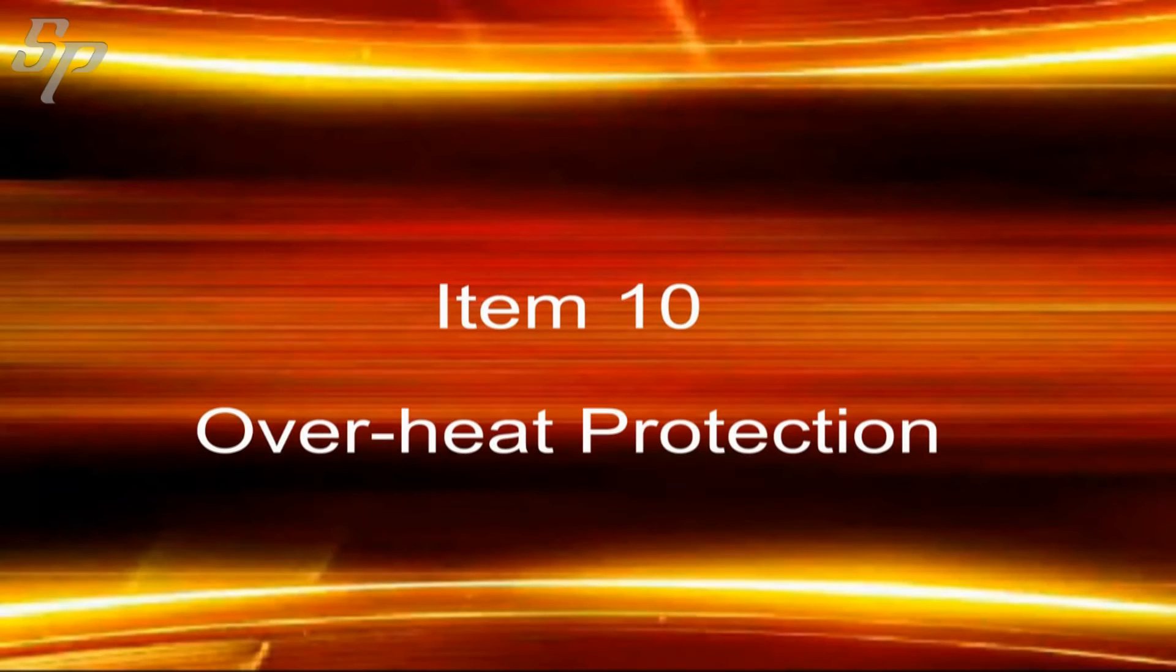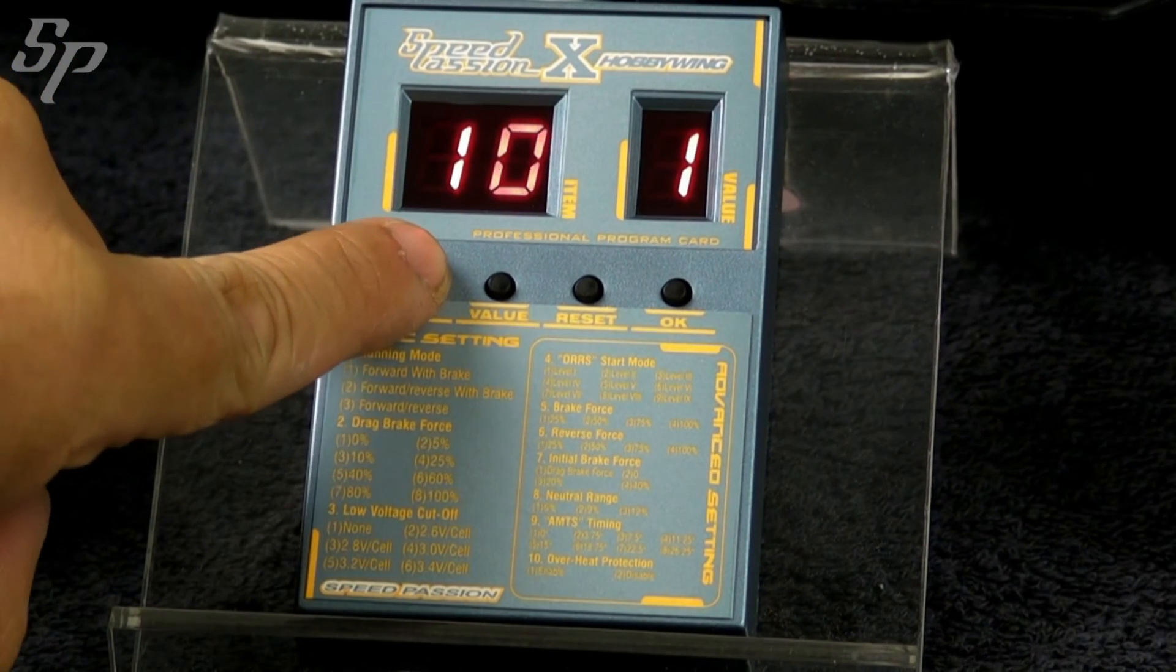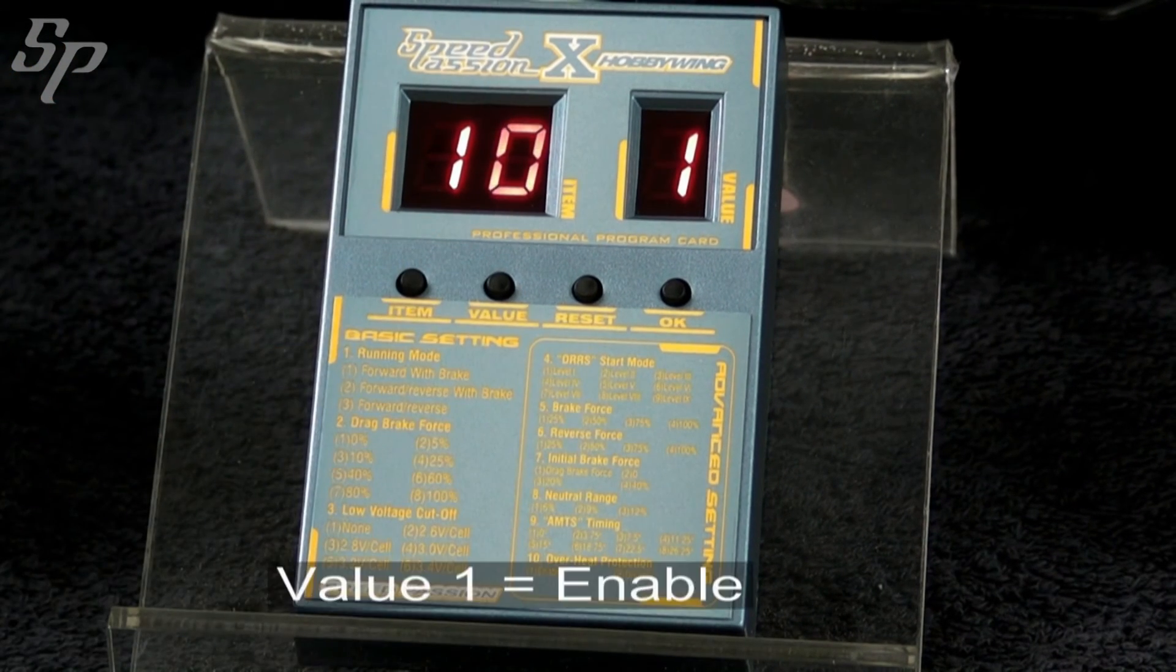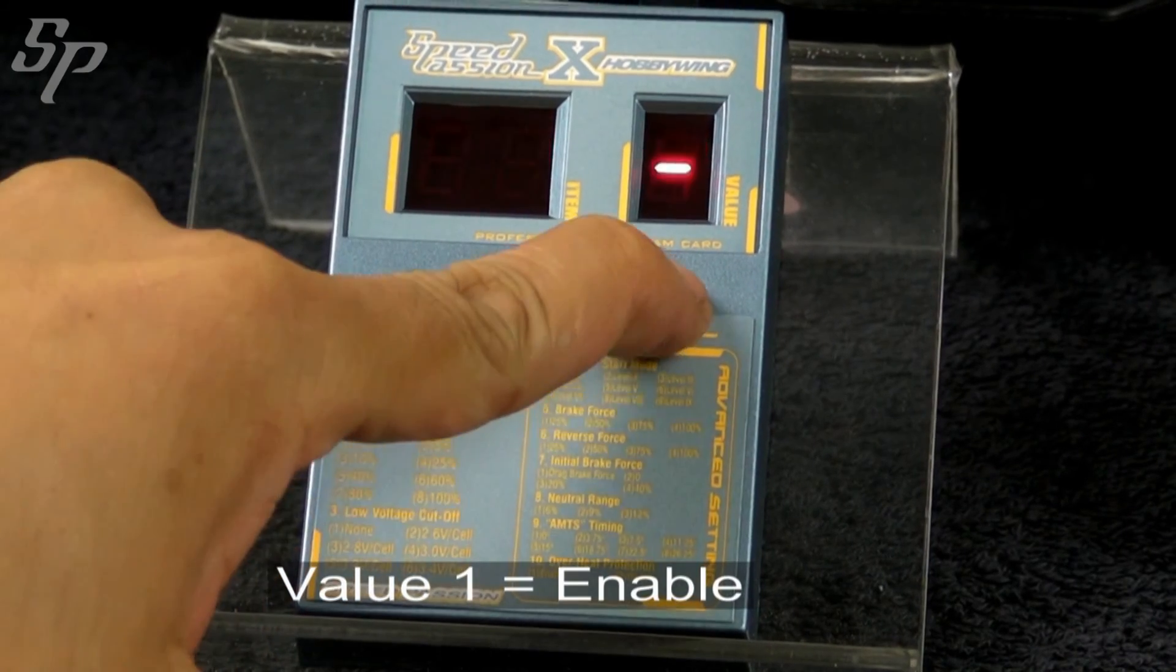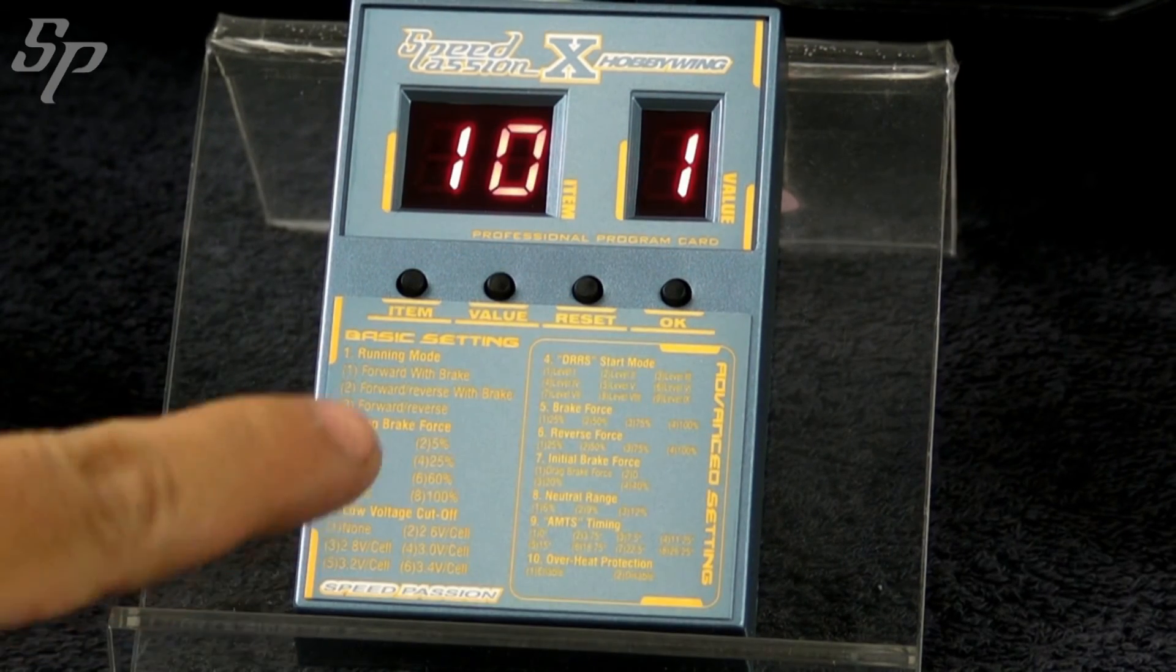Item 10 is about overheat protection. A value of 1, the ESC will start working at 95 degrees Celsius.